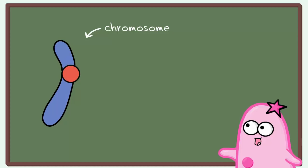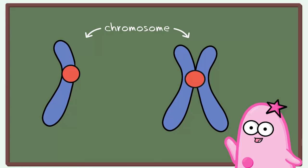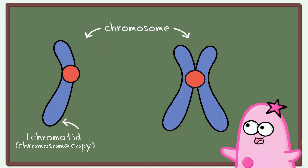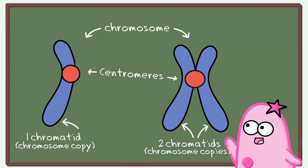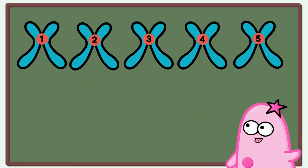This is a chromosome. This is also a chromosome. The difference is that the first one only had one chromatid, or copy, and the second one has two chromatids, or copies. The area in the middle of the chromosomes is called a centromere, and the centromere is where the spindle is going to attach. That's how you're going to move the chromosomes during any division process. Generally, when you count chromosomes, you can count them by the number of centromeres present.